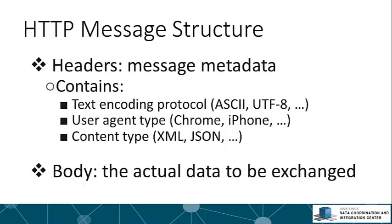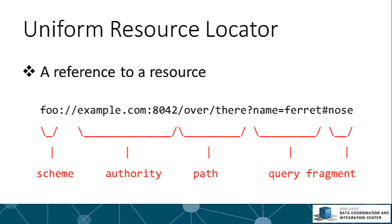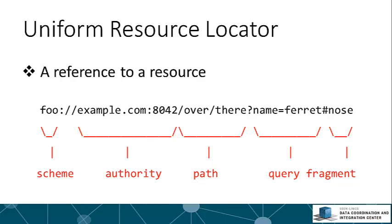Hopefully you're starting to see how HTTP allows for RESTful applications. HTTP specifies URLs, or Uniform Resource Locators — a URL is a reference to a resource. A URL has several parts: first, the scheme (typically HTTP or HTTPS, but could be FTP or mailto), which specifies how to connect. Next, the authority contains the domain name — the human-readable name for the address — specifying where to connect. Finally, the path, query, and fragment specify what to ask for.